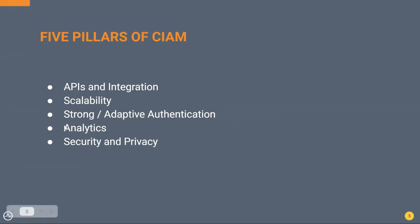When we build a complete CIAM solution there are five key features — the five pillars of CIAM — that you need to focus on: APIs and integration, scalability, strong and adaptive authentication, analytics, and security and privacy. You need to ensure sufficient effort is put into implementing all of these requirements — they are critical.